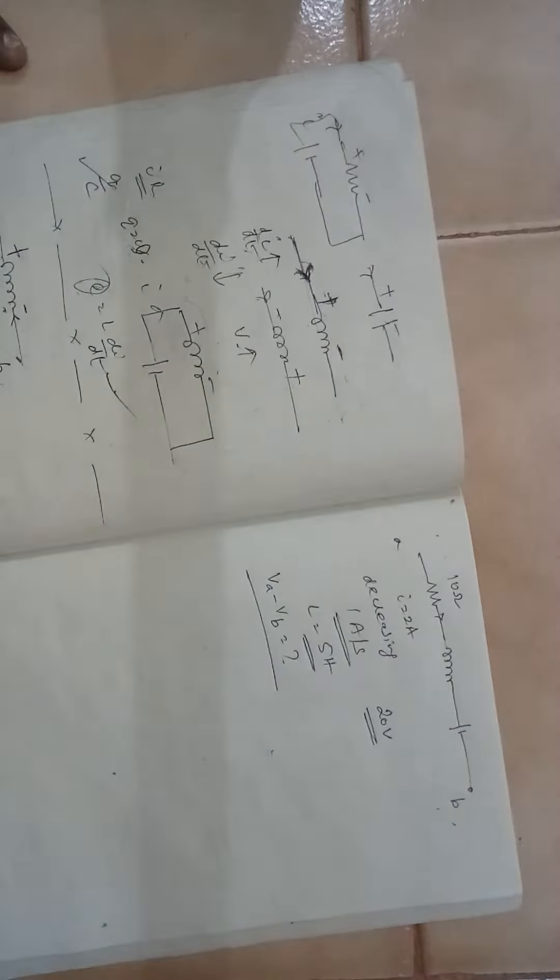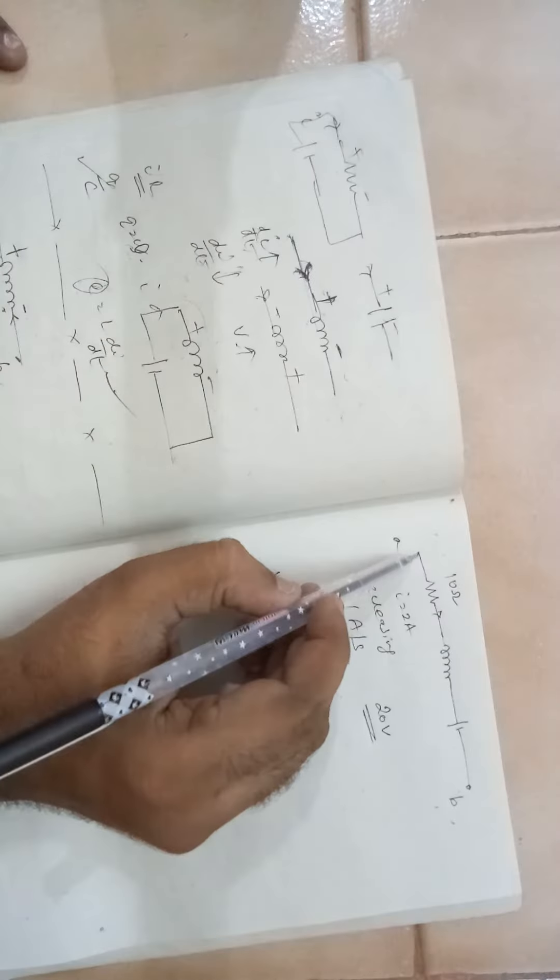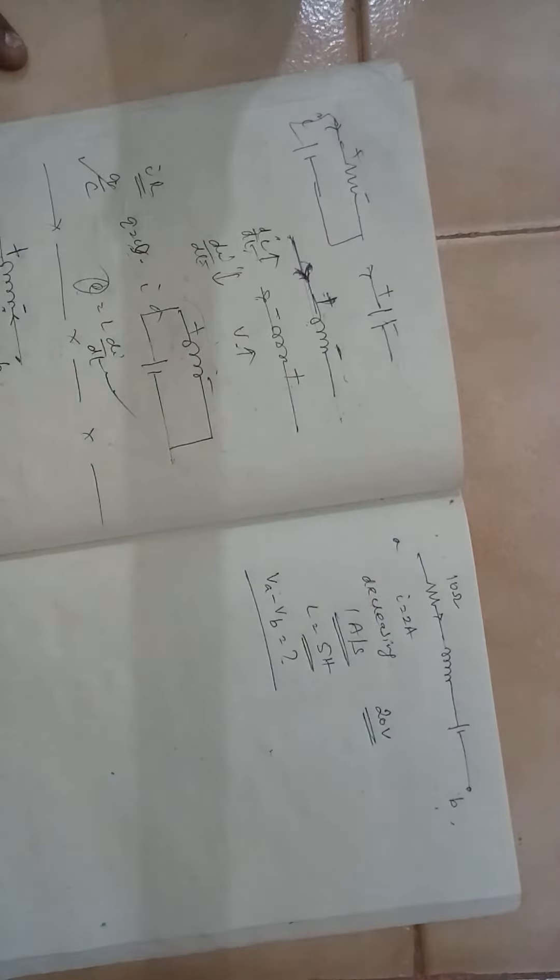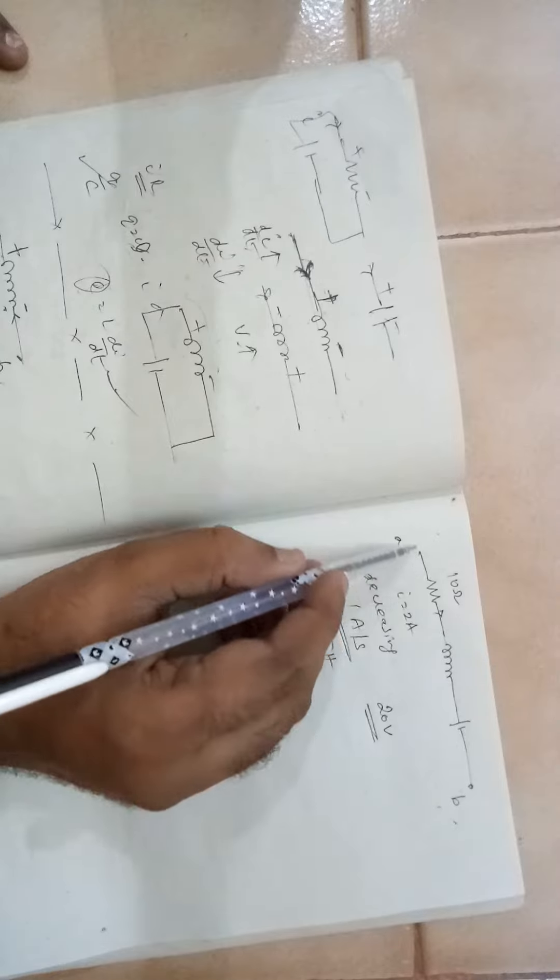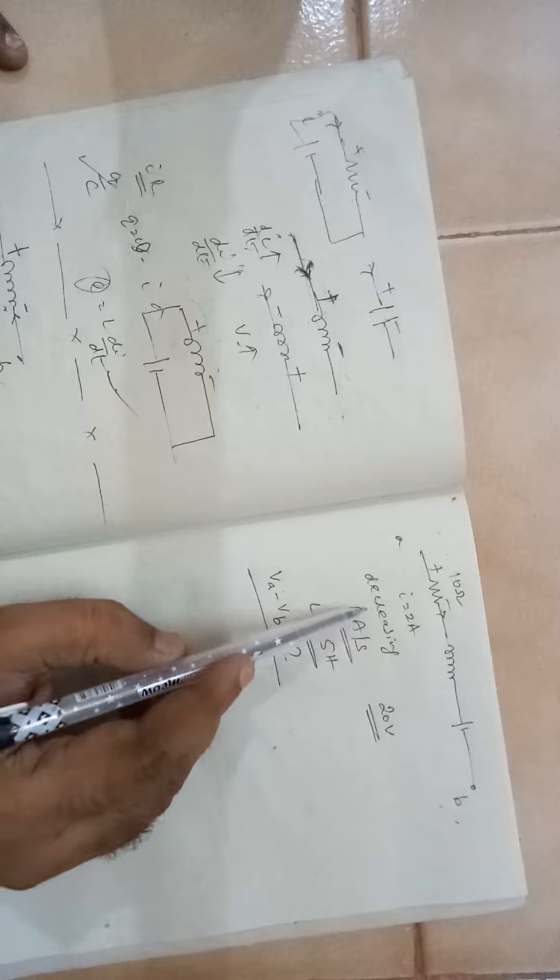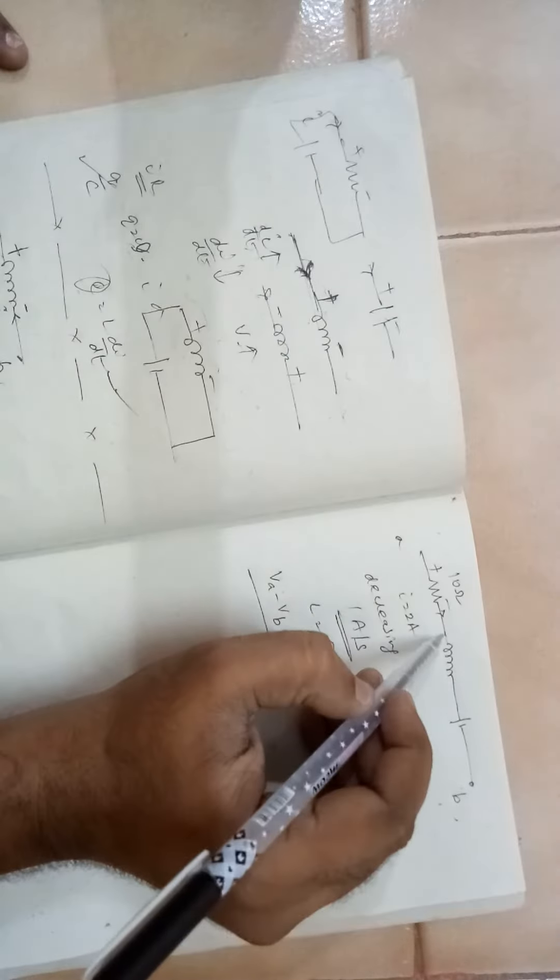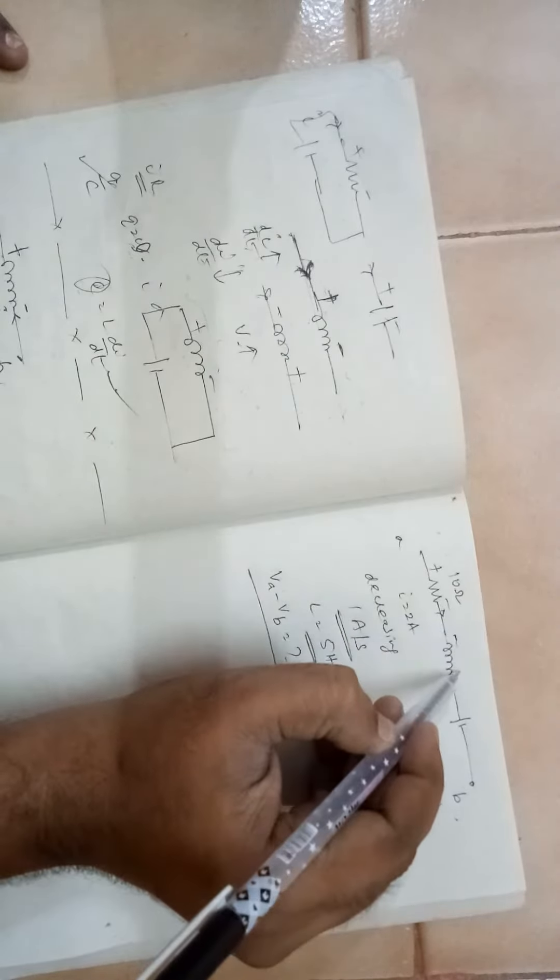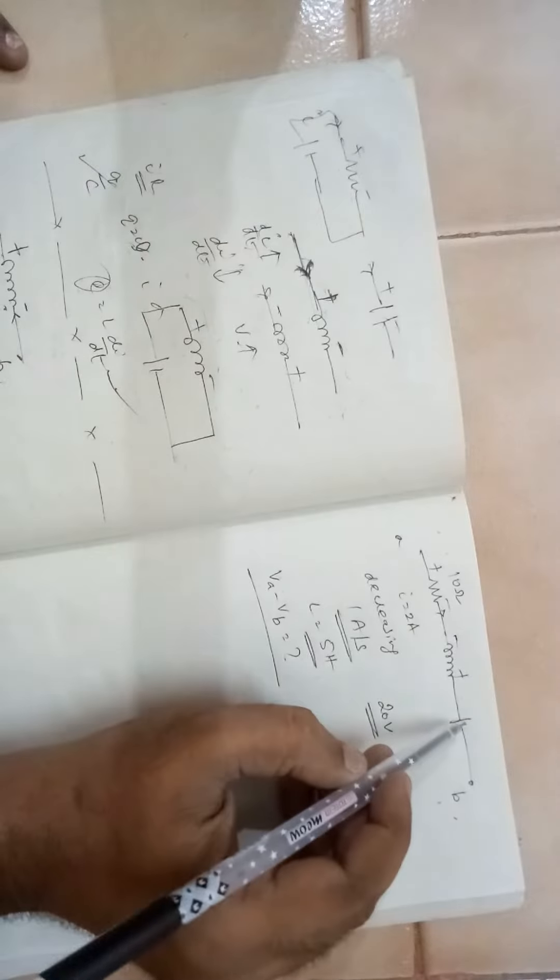So let us apply from this end. Current is flowing, let us mark plus minus here. Current is flowing in this direction, so for the resistor plus minus. Current is decreasing, so voltage will rise. Minus plus. This is plus minus.